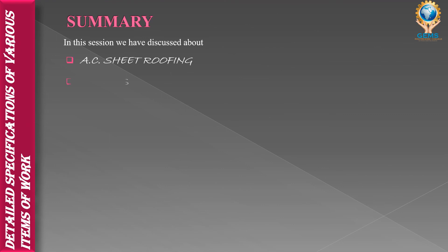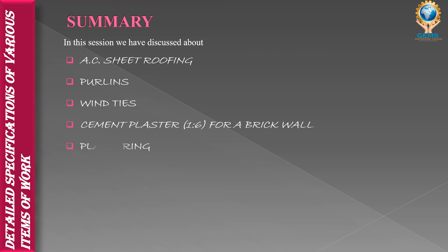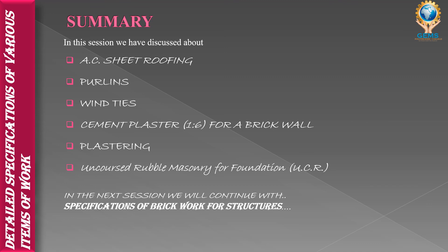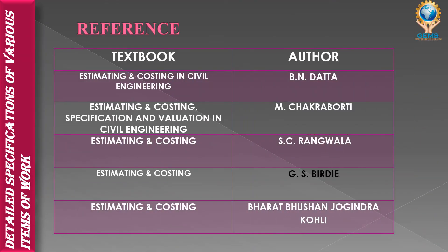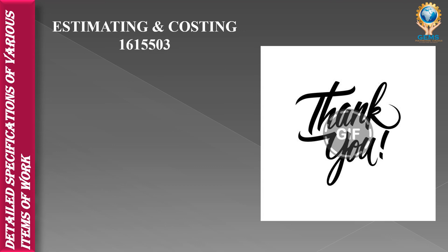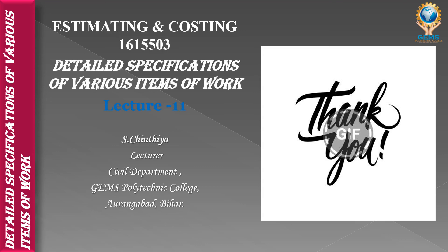In summary, in this lecture we have learned the specifications of AC sheet roofing, cement plaster for a brick wall, and uncoat rubble masonry for foundation. The references for this subject include: Estimating and Costing in Civil Engineering by D.N. Data; Estimating, Costing, Specification and Valuation in Civil Engineering by M. Chakraborti; Estimating and Costing by Rangwala; by G.S. Birdie; and by Barak Bush and Johindra Koli. In the next lecture, we will continue with other items of work and their detailed specifications. Thank you.